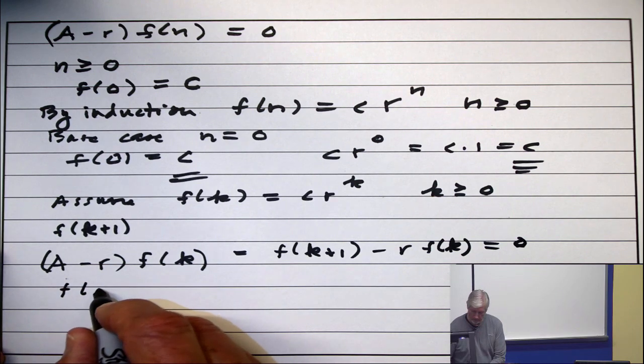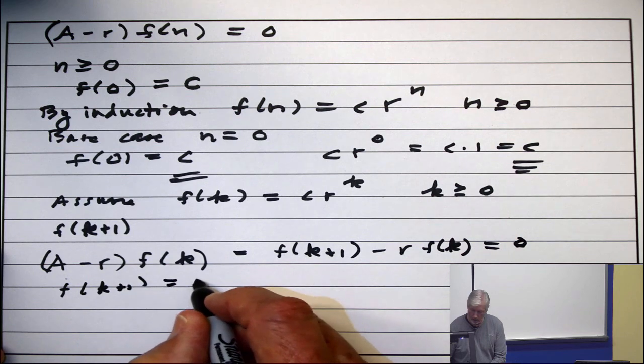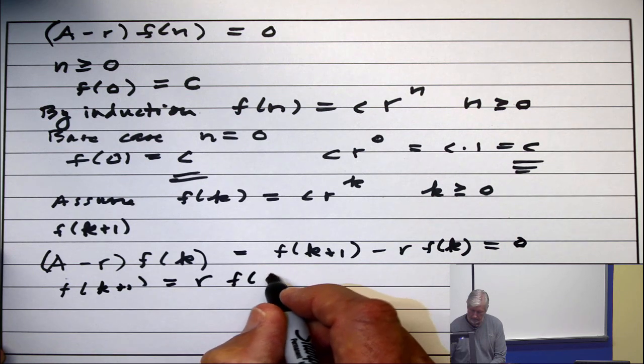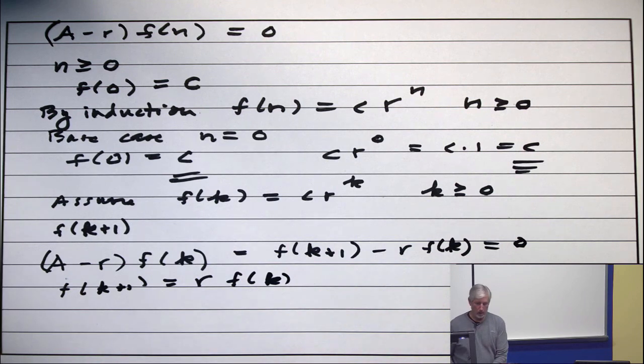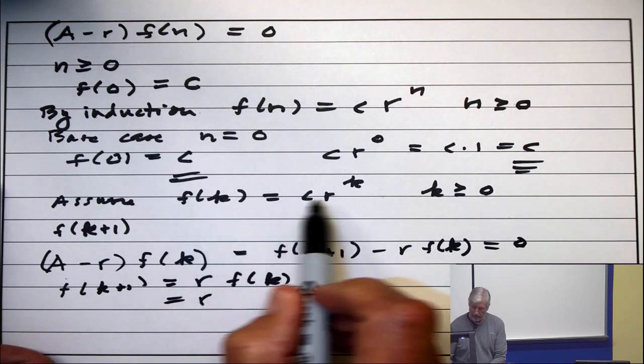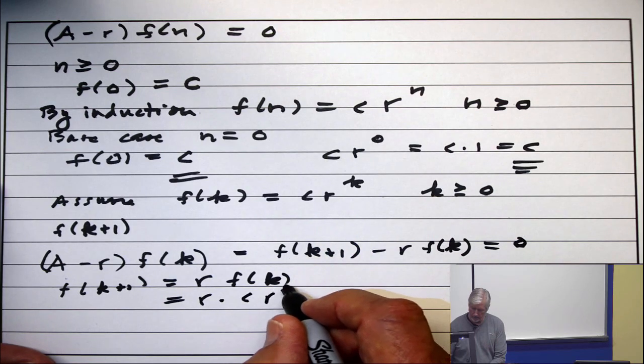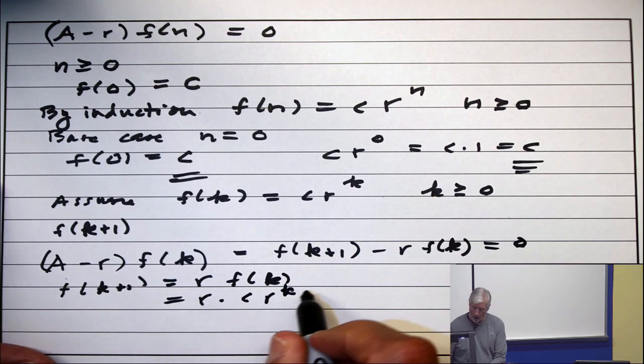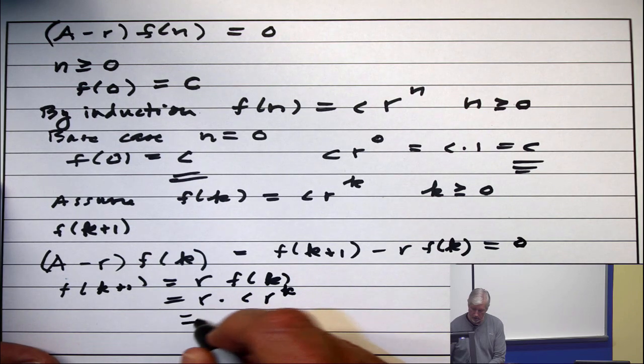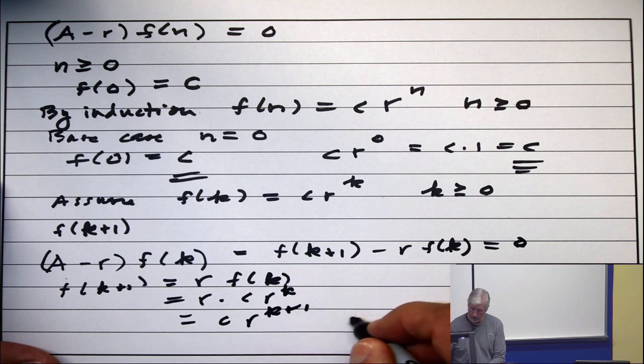That's translating the top equation into the specific value for k. So f(k+1) = r·f(k). But we've already seen that f(k) = c·r^k. Then r times r^k is c·r^(k+1), done.